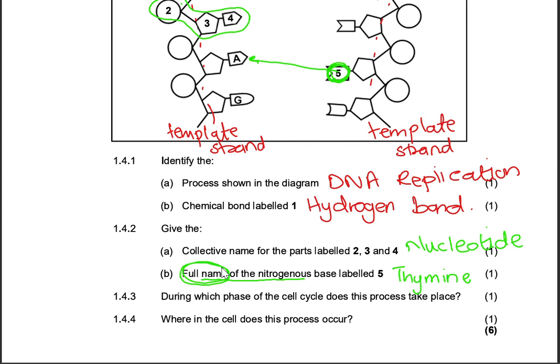1.4.3, during which phase of the cell cycle does this process take place? We know that it takes place during interphase. So DNA replication takes place during interphase, just before cell division, just before meiosis or mitosis. Where in the cell does this process occur? That's 1.4.4. It definitely occurs in the nucleus.